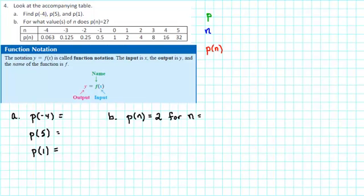Look at the accompanying table. Find p(-4), p(5), and then in Part B, for what value or values of n does p equal 2?